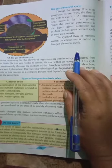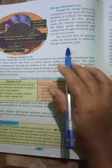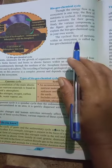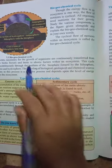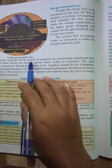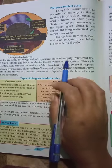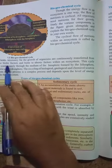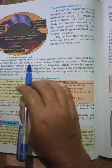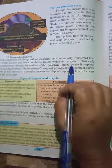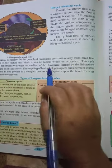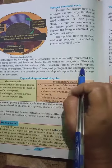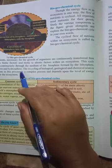The definition of the biogeochemical cycle: the cyclical flow of nutrients within the ecosystem is called the biogeochemical cycle. Nutrients necessary for the growth of organisms are continuously transferred from abiotic to biotic factors and abiotic to abiotic factors within an ecosystem. This cycle operates continuously through the medium of the biosphere — by the lithosphere, atmosphere, and hydrosphere.